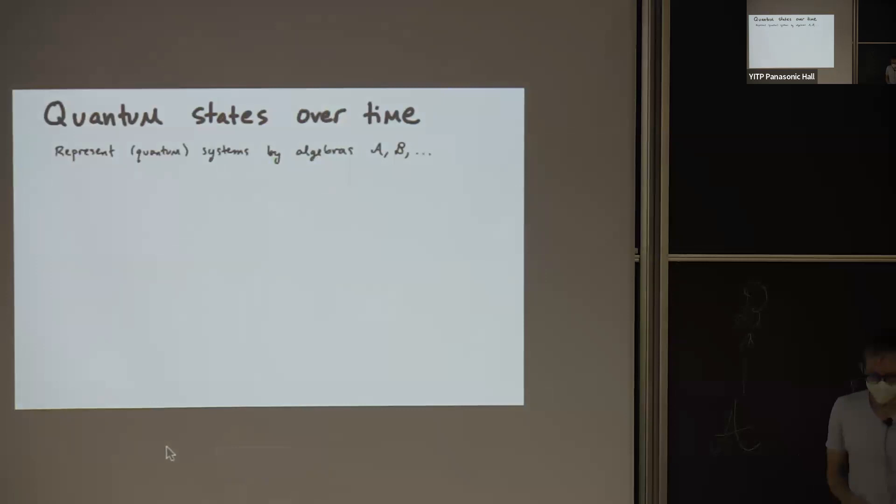So we're going to represent our quantum systems by the algebras A and B. And for me, a quantum state over time is going to be a function that associates to each initial state on the algebra A, together with some evolution from A to B, an element of A tensor B. And I'm going to denote it by rho star E. And we're just going to require two conditions for now, that when you partially trace out B, you get back your initial state. When you partially trace out A, you get your final state.